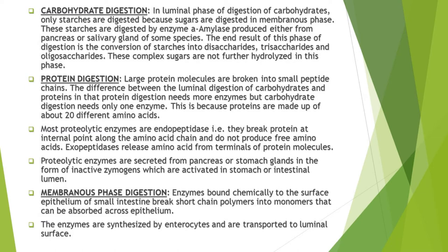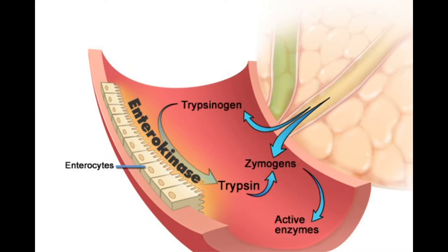Proteolytic enzymes are secreted from the pancreas or stomach glands in the form of inactive zymogens and are only activated in the stomach or intestinal lumen. For example, pepsinogen is in inactive form and is activated to pepsin in the stomach when it encounters hydrochloric acid. Similarly, trypsinogen and chymotrypsinogen coming from the pancreas get activated in the small intestine when they encounter enterokinase, which converts them to trypsin and chymotrypsin.